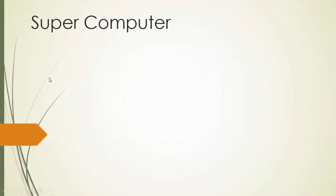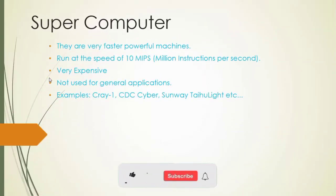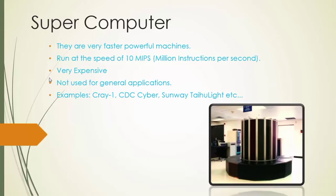Number one: Supercomputer. Supercomputers are very fast and powerful machines. They run at the speed of 10 MIPS — that is, million instructions per second.